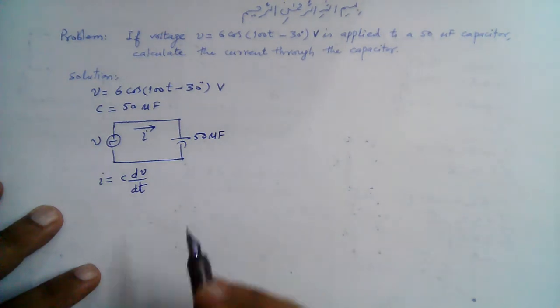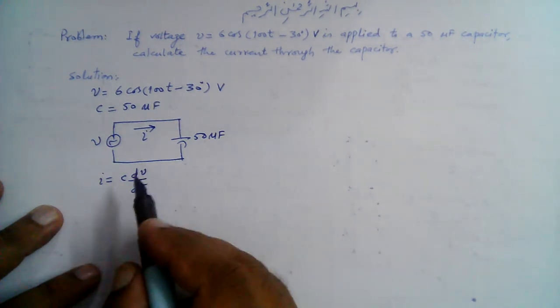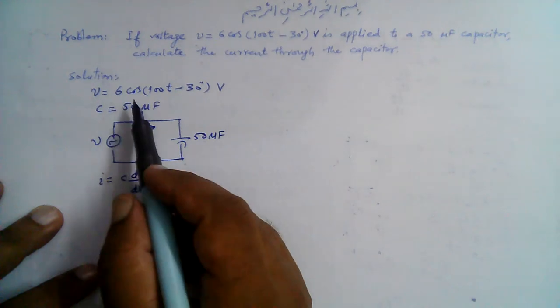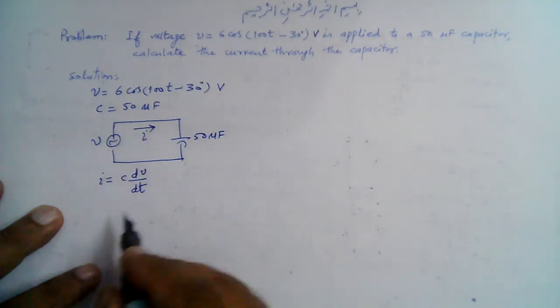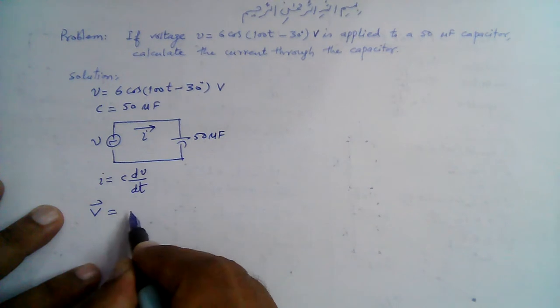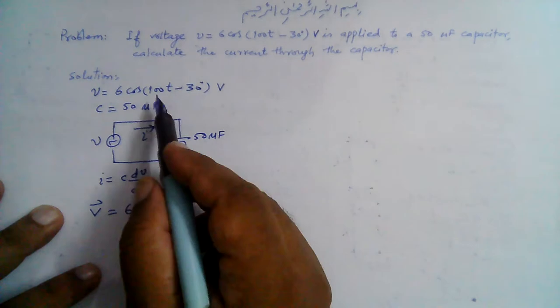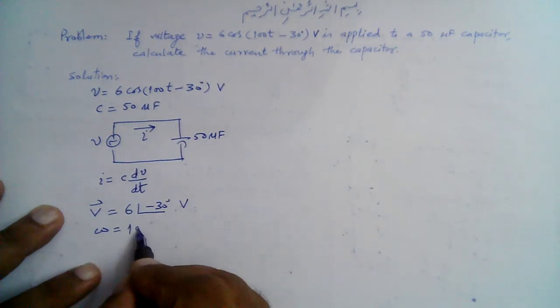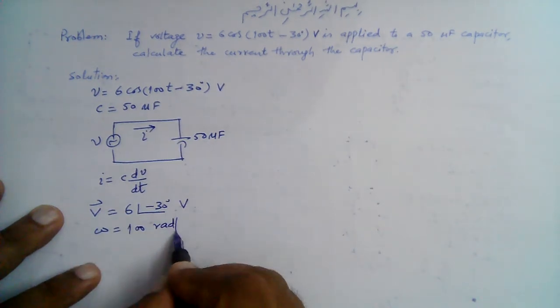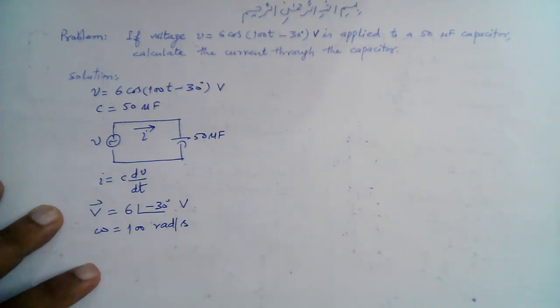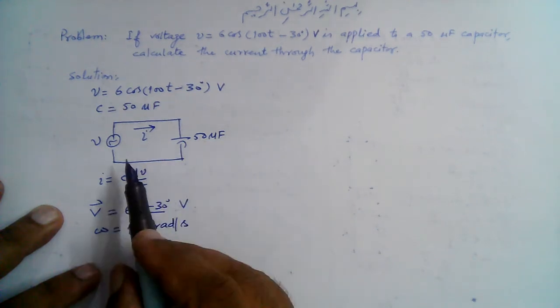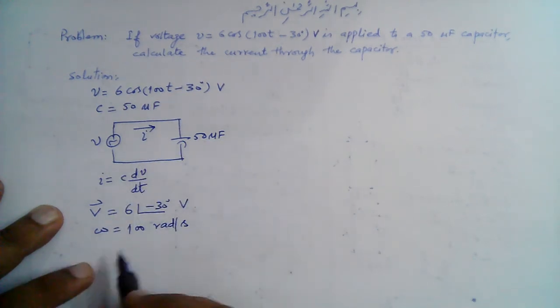Let's do it in the phasor domain. The corresponding phasor for this voltage is V̅ = 6∠-30° volts, and we have omega equal to 100 radians per second.